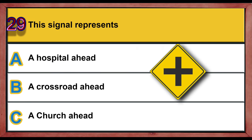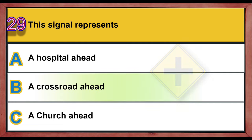Question 29. This signal represents: A. A hospital ahead. B. A crossroad ahead. C. A church ahead. Correct answer is B: A crossroad ahead.